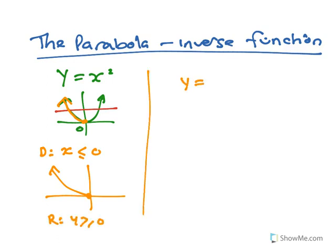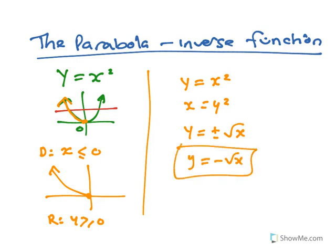To get the actual inverse, you swap the x's and the y's and you solve for y. But because I only took the negative half of the branch, that would be my inverse function. The domain and range will be the same as the other one — they just swap.